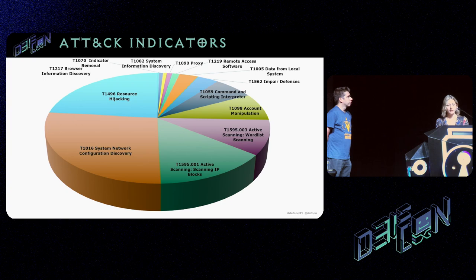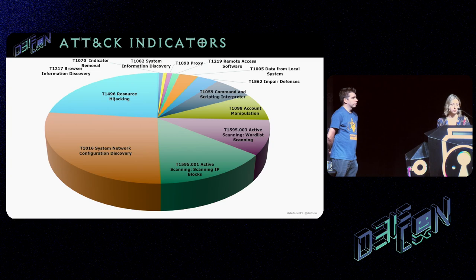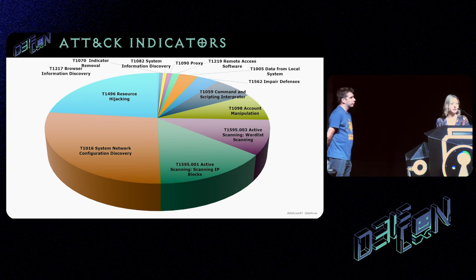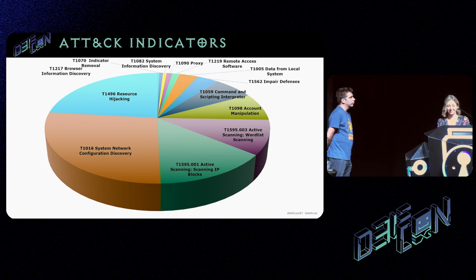Looking at the MITRE ATT&CK framework indicators, there's a lot of resource hijacking, system network configuration discovery, active scanning including scanning IP blocks and wordlist scanning. Basically what you see the most is reconnaissance and discovery.